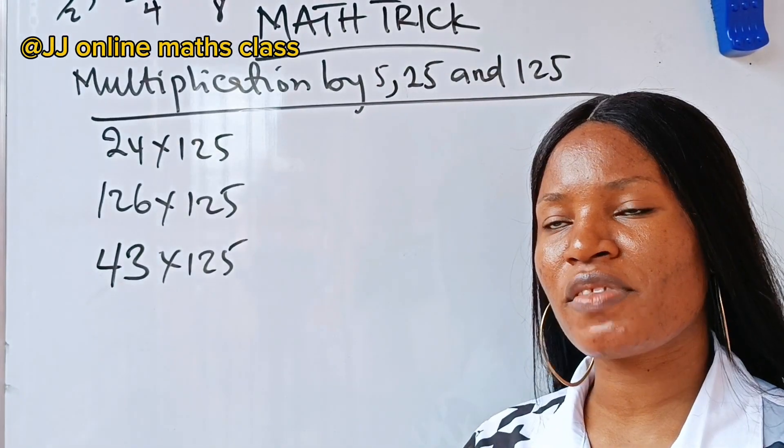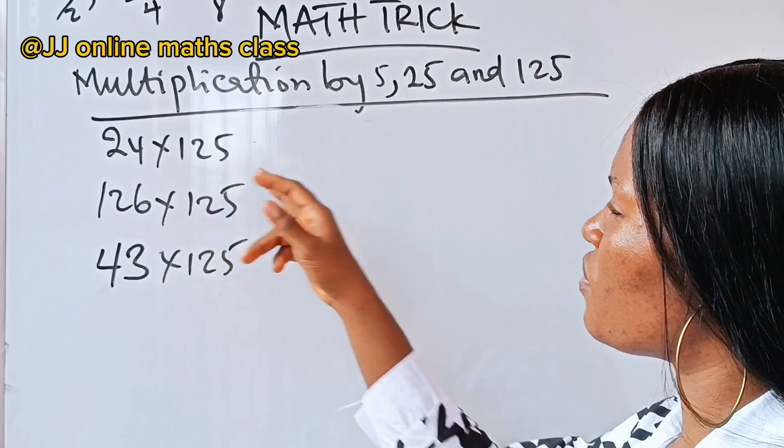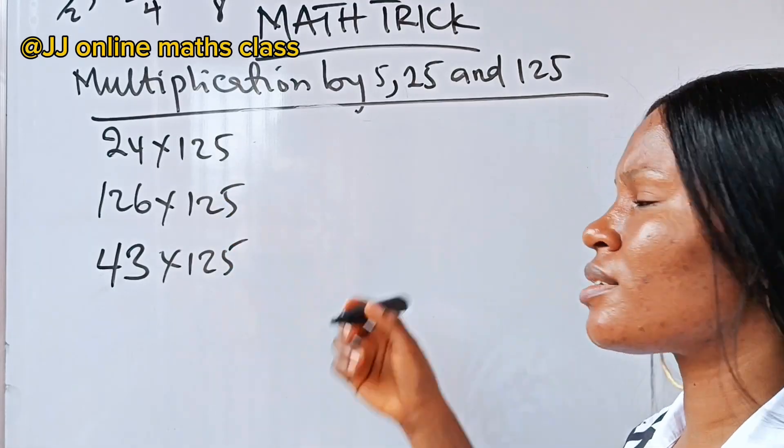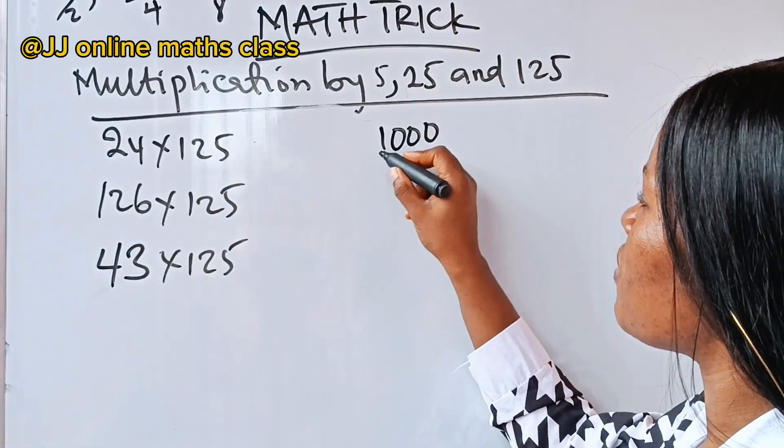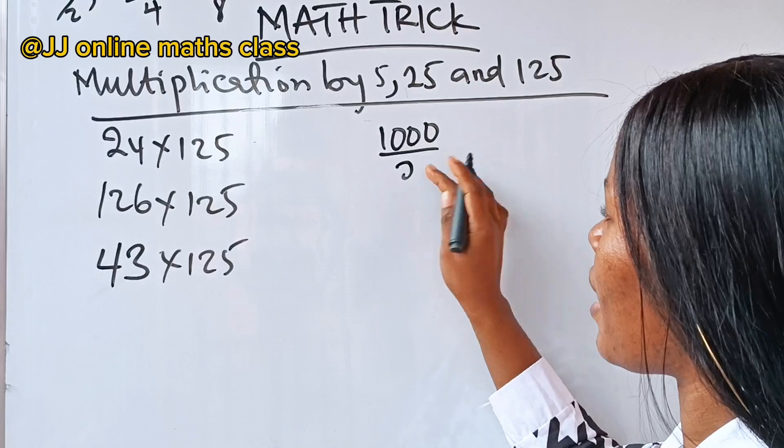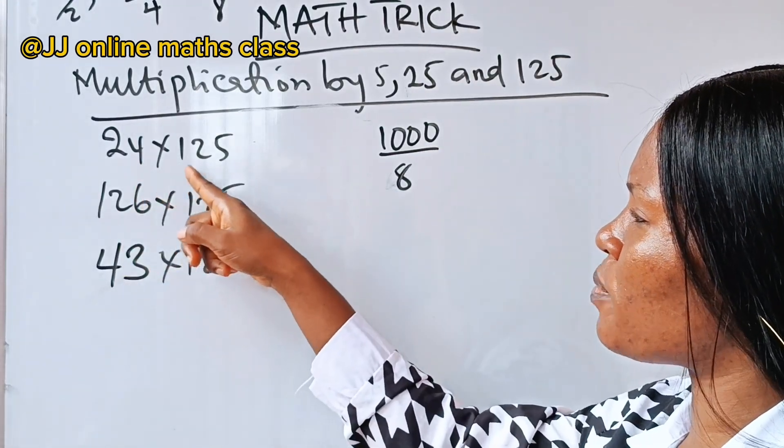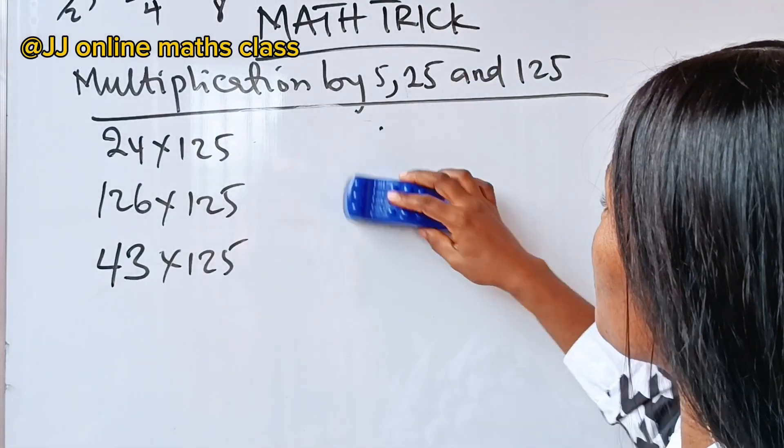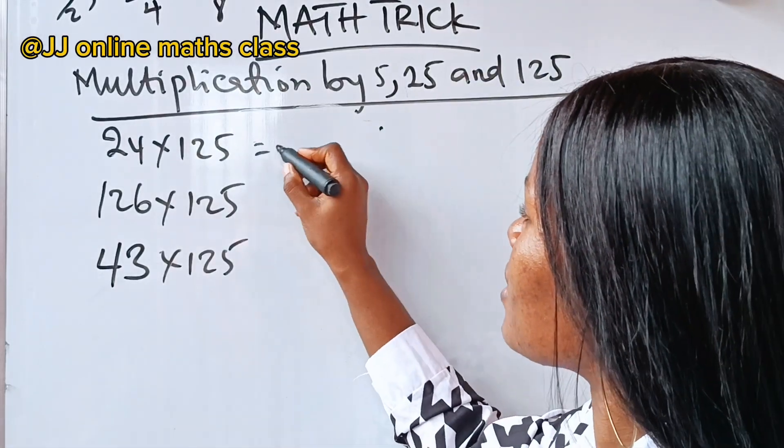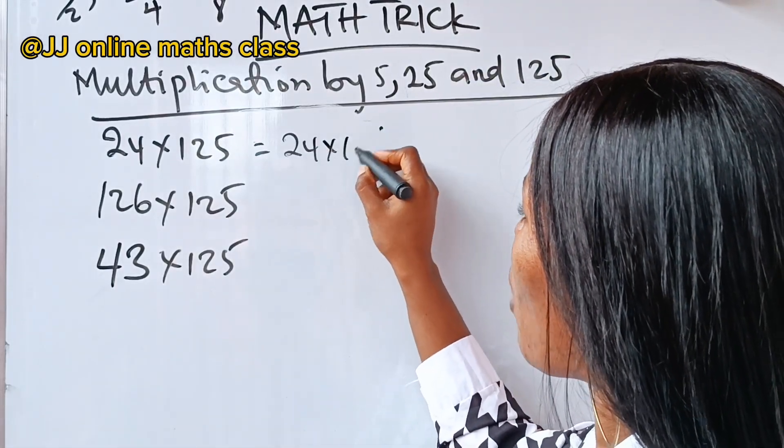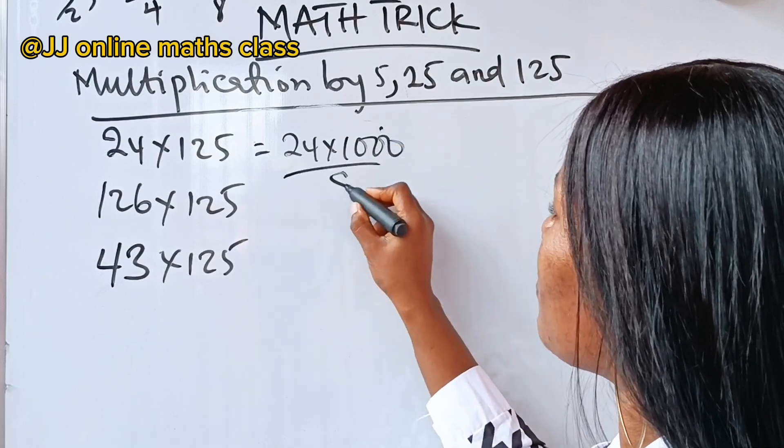Now, let's solve it. 125 is the same thing as 1000 divided by 8. So, if you are asked to solve 24 multiplied by 125, all you need to do is... This is the same thing as 24 multiplied by 1000 divided by 8.